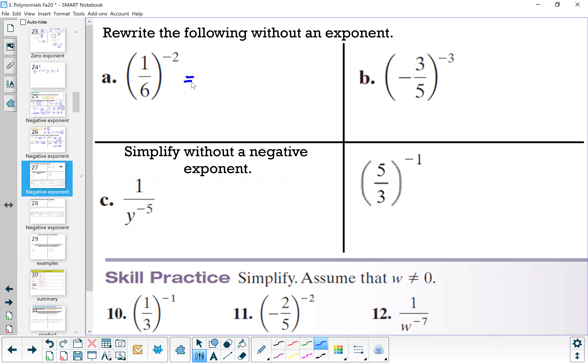1/6 is our base, so the reciprocal of 1/6 is 6/1, and then your exponent is positive. So negative 2 goes to 2. We can write 6/1 as 6, so this is 6 squared, which is just 6 times 6, and that's 36.